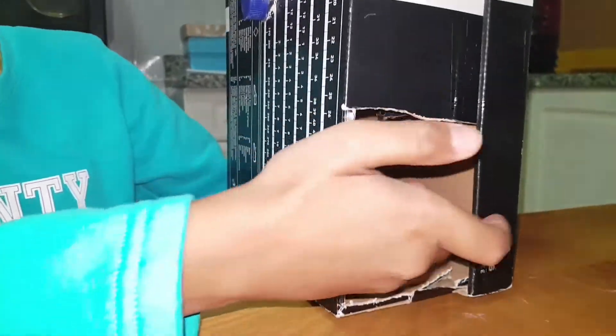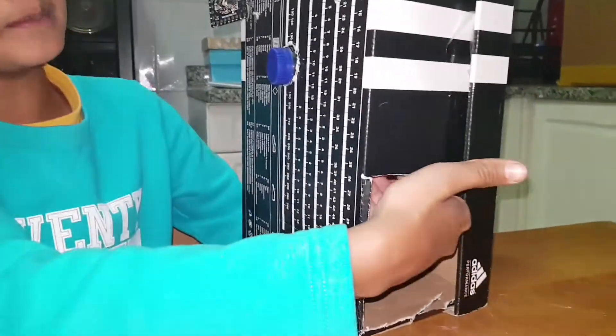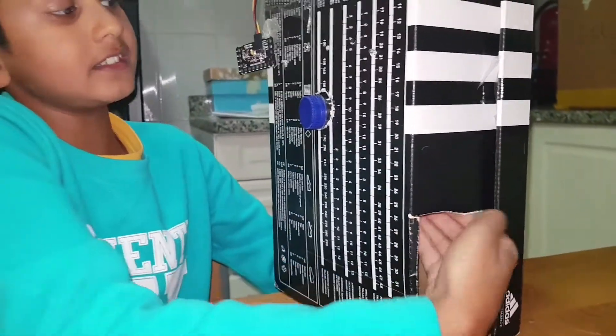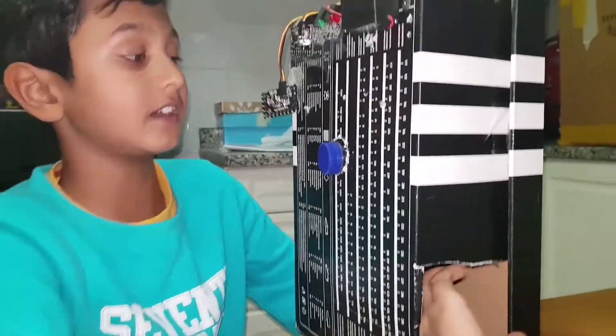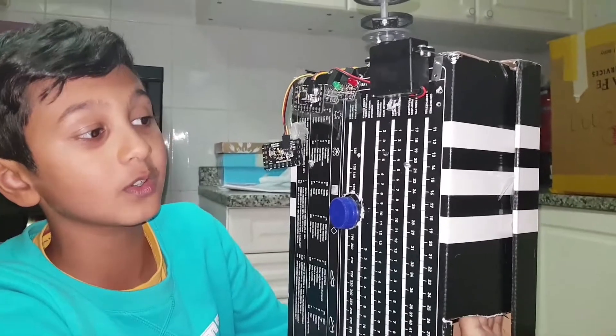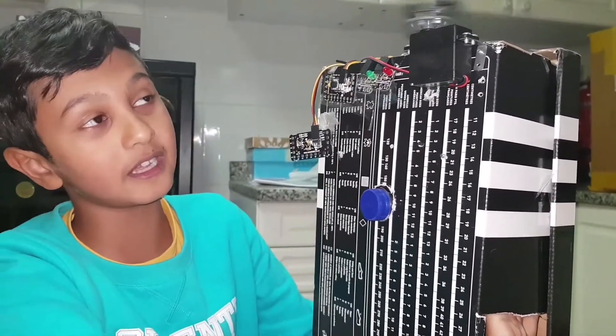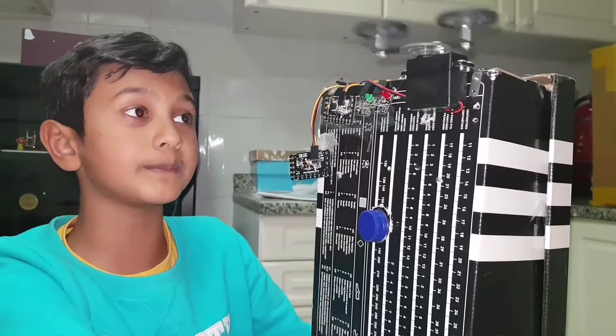So, there is an IR sensor up here, no one can see it, it's hidden. When he comes and takes it out, this will start, this fan will start, and then the person will know that someone's stealing it, and then the person can call the police.